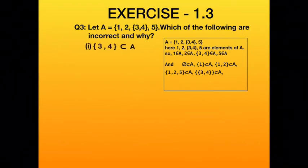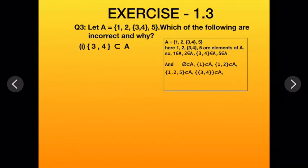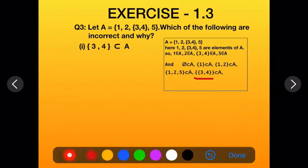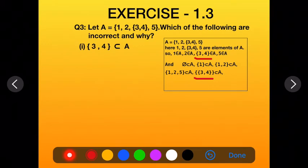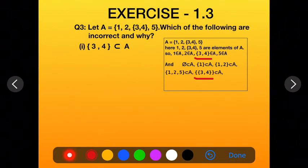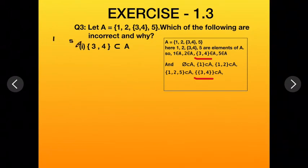First part: {3, 4} ⊆ A. Since {3, 4} is an element of A (it belongs to A), to represent it as a subset we need double curly brackets: {{3, 4}} ⊆ A. But here it is written as {3, 4} ⊆ A without double brackets. So this statement is incorrect — the answer is false.